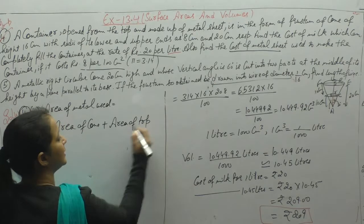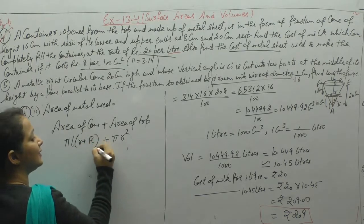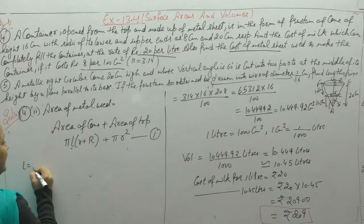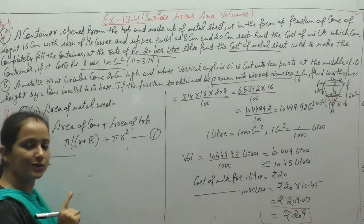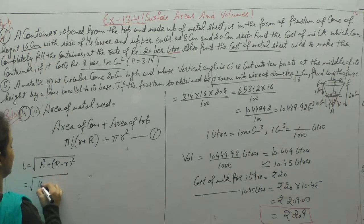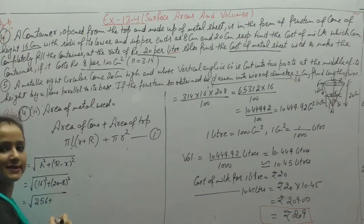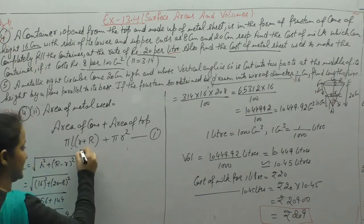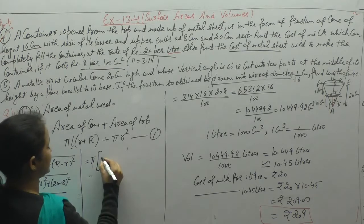Area of metal used equals area of the frustum (curved surface) plus area of the bottom base. Since the top is open, we only take the bottom circular area πr² and the lateral surface area π×l×(R + r). Now we find slant height l = √(h² + (R−r)²). h = 16, R−r = 20−8 = 12, so l = √(256 + 144) = √400 = 20 cm.